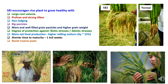SRI increases rice plant growth with large root volume because younger seedlings and wider spacing enable better root establishment and extraction of nutrients from the soil. There will be profuse and strong tillers — maximum tillering of 30 tillers per plant is easily achieved, and 50 tillers per plant are also quite attainable, occurring concurrently with panicle initiation. Under excellent management, even 100 fertile tillers per plant or more can be achieved due to early transplanting and absence of root dieback. There will be non-lodging of tillers and plants because of wider spacing and better root growth.